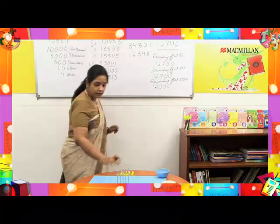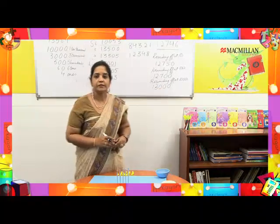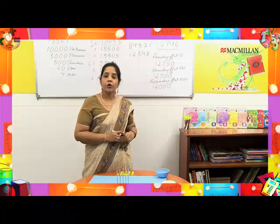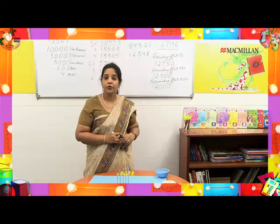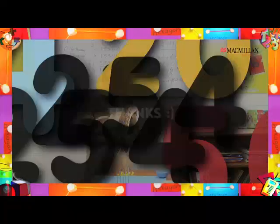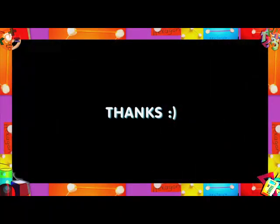Now let us round off at thousands. Recreating 12,746, I look at the hundreds position to the right of thousands — it has 7 hundreds. Since 7 is 5 or more, I add one more bead to the thousands position and remove all digits to its right. So rounding 12,746 at thousands gives us 13,000. I hope you enjoyed this class and got your concepts clear.